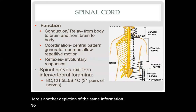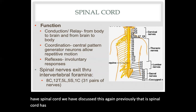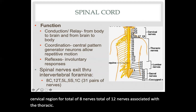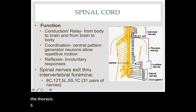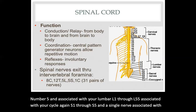Moving on to the second part of the central nervous system, we have the spinal cord. The spinal cord has a total of 31 pairs of nerves. They are broken down into the cervical region for a total of eight nerves, twelve nerves associated with the thoracic, five associated with your lumbar L1 through L5, five associated with your sacral S1 through S5, and a single nerve associated with the coccyx called the coccygeal nerve.